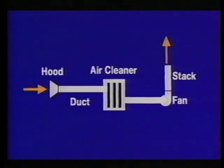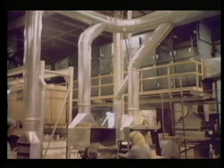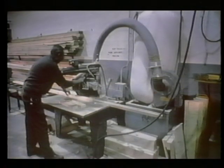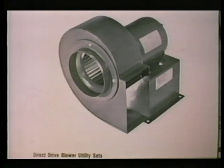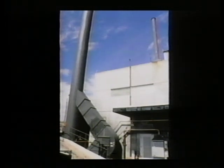The local exhaust system consists of five important components. It will work properly only if enough contaminants are captured by the hood so that concentrations in the workroom air remain below acceptable limits. The ductwork or piping transports the contaminants to an air cleaner or to the outdoor environment. Many local exhaust systems must be equipped with air cleaning equipment to meet air pollution requirements. The fan must develop enough static pressure to pull the desired amount of air and contaminants into the hoods and through the ducts. Finally, a stack is used to disperse the exhaust air stream and any contaminants that get past the air cleaner.